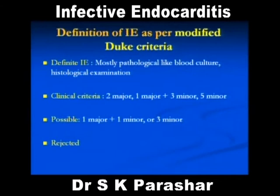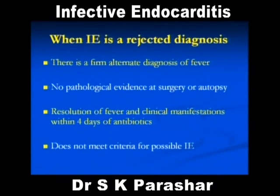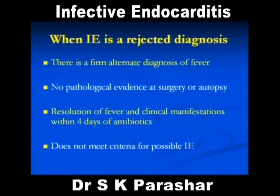We are more interested in rejected diagnosis. Sometimes patients come and treatment is started, but we are not sure it is infective endocarditis. When do we say it is a rejected diagnosis? When there is a firm alternate diagnosis of fever. If you find a strong alternate diagnosis, then avoid the infective endocarditis label. Number two: resolution of fever and clinical manifestations within four days of antibiotics excludes infective endocarditis — it may take one week or ten days in true IE.